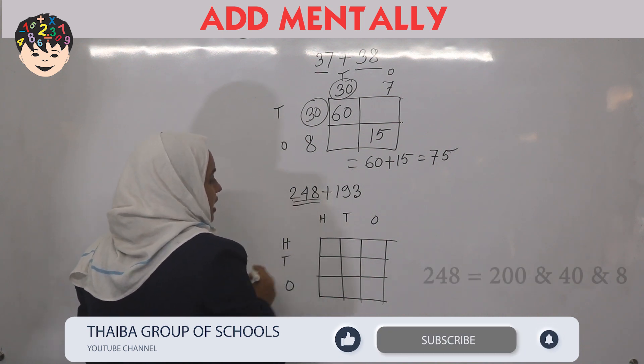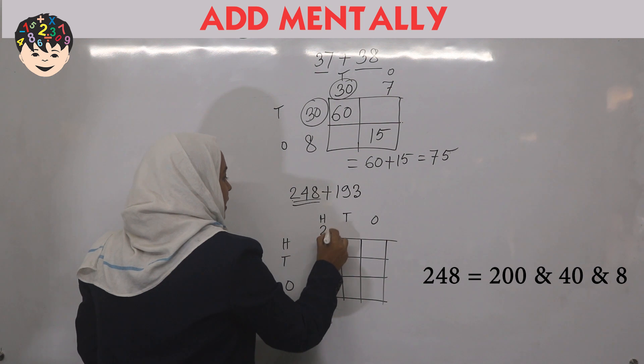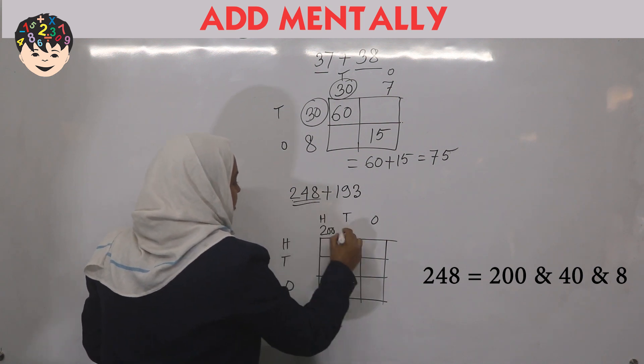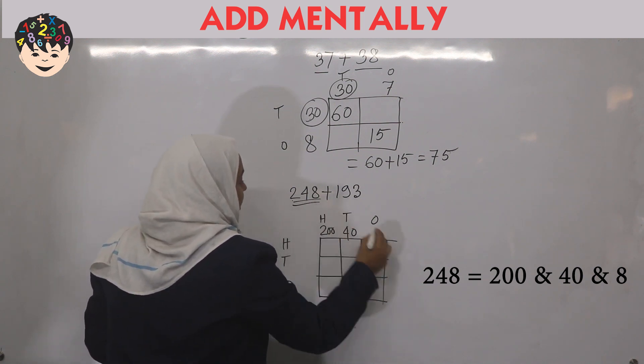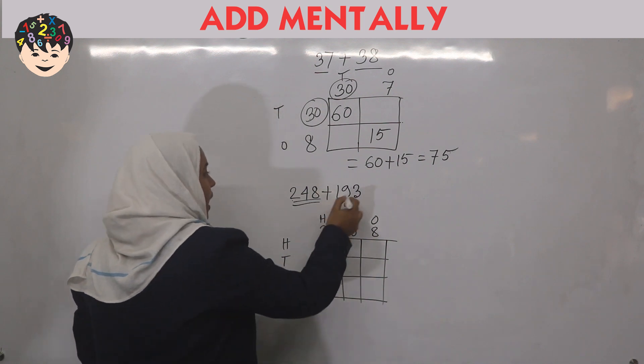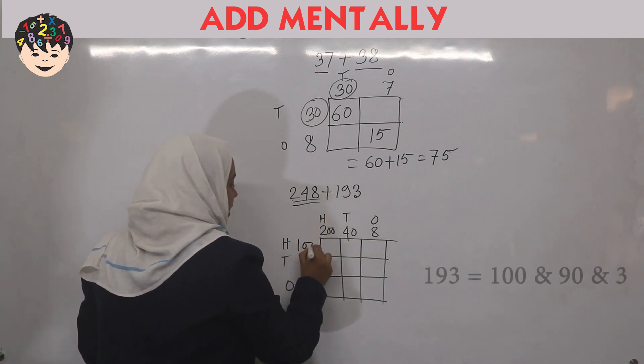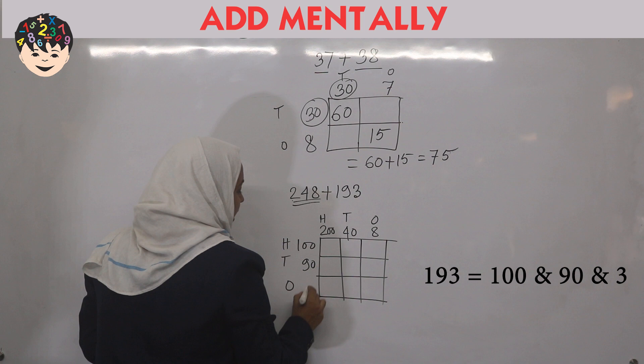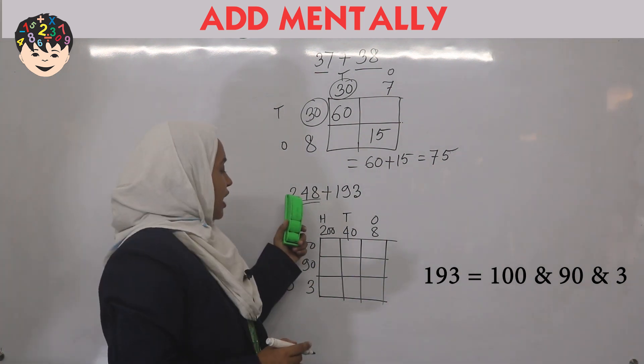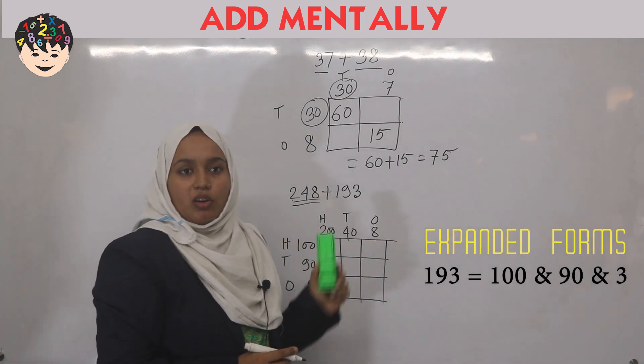So two hundred forty-eight. So two hundred you have to write here, forty here and eight here. Then one hundred ninety-three. One hundred, ninety and three. Basically we have to write the expanded form of the numbers.